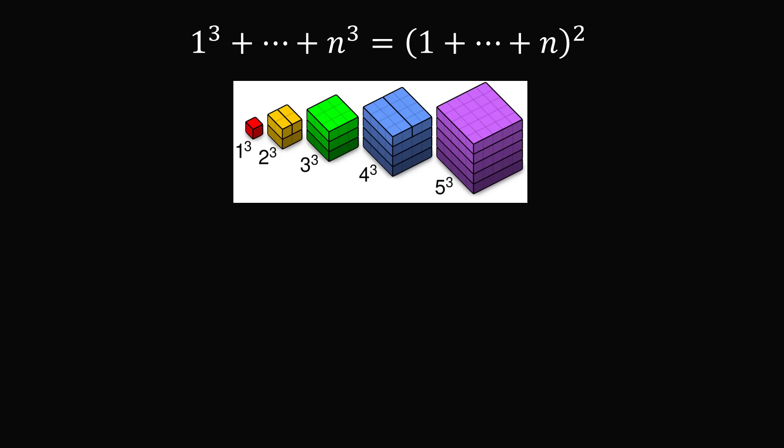The sum of the n cubes will count the total number of cubes in this diagram. Think about the green cube. We have 3 by 3 by 3, so there will be 3 cubed or 27 cubes in the green cube.